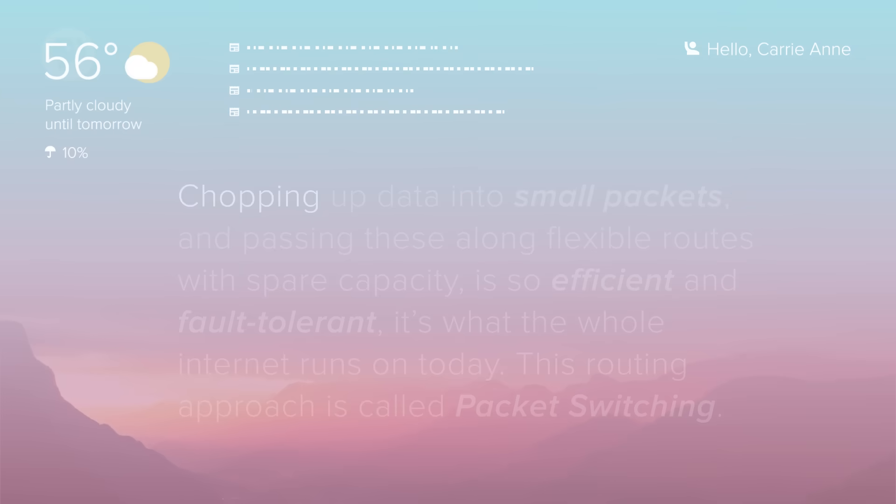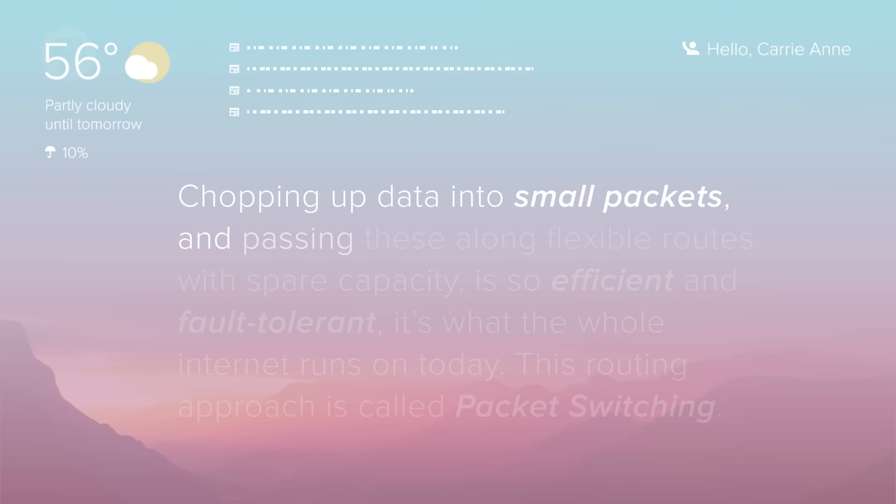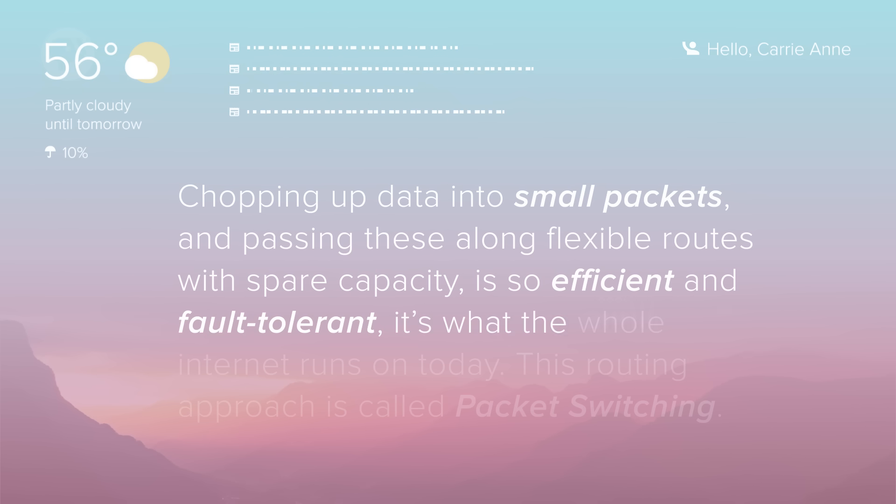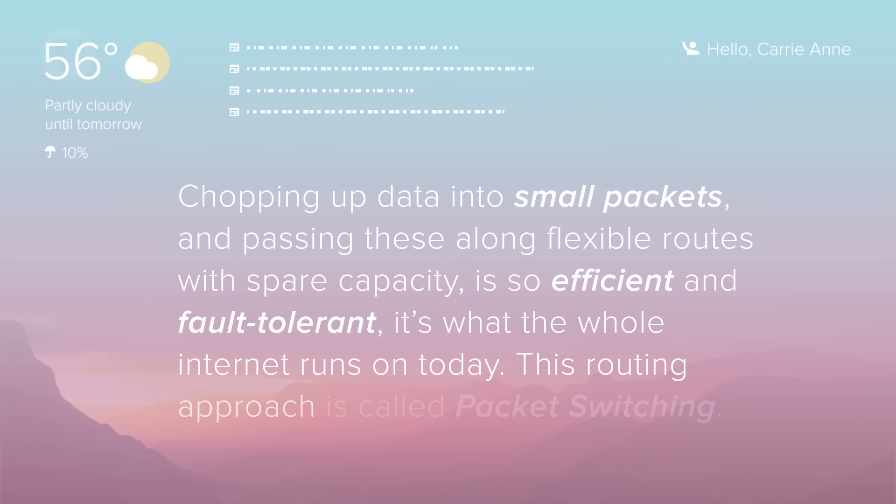We'll talk more about that next week. Chopping up data into small packets, and passing these along flexible routes with spare capacity, is so efficient and fault-tolerant, it's what the whole Internet runs on today. This routing approach is called packet switching. It also has the nice property of being decentralized, with no central authority or single point of failure. In fact, the threat of nuclear attack is why packet switching was developed during the Cold War. Today, routers all over the globe work cooperatively to find efficient routings, exchanging information with each other using special protocols like the Internet Control Message Protocol and the Border Gateway Protocol.